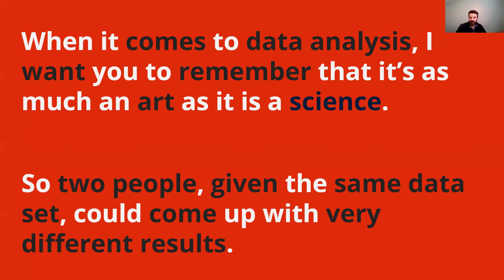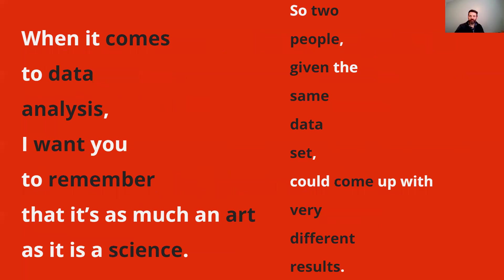Here I've highlighted in black the words that are the primary content words. If these sentences are spoken fluently, the black words are the ones that will receive the most stress. I've also grouped the words into stress units — all the white words grouped with a black word are likely to be said very quickly, with stress remaining on the black word. In the first sentence there are many function words, so that phrase 'it's as much an art' gets squished together with 'art.' In the second sentence there are far more content words, so each is heard much more clearly.